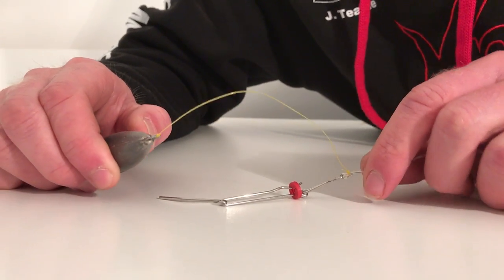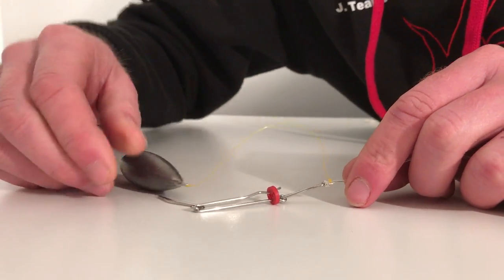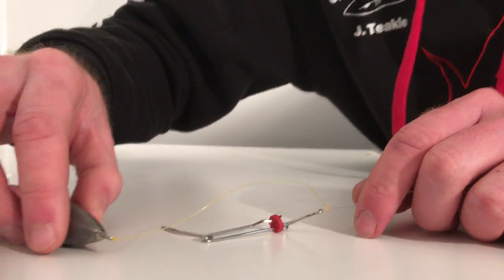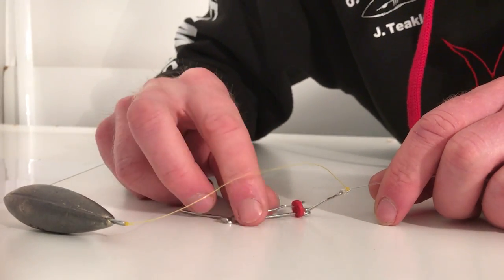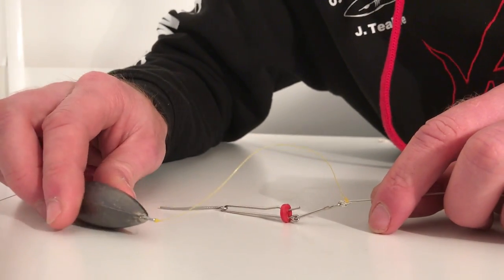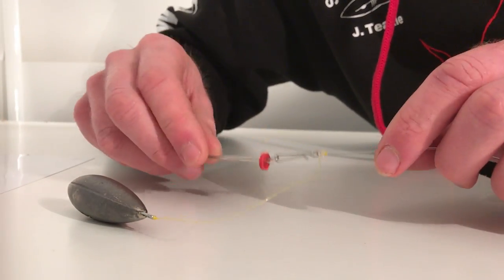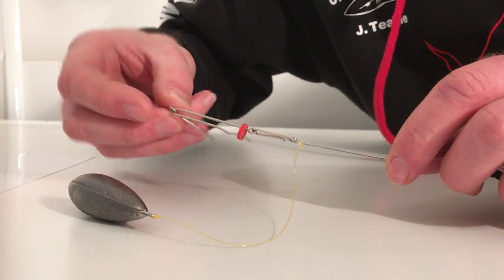This is the Gemini Breaker, a device that enables you to get your gear back hopefully and only lose the lead when you become snagged on the sea bed. What you've got then is this swiveling arm.